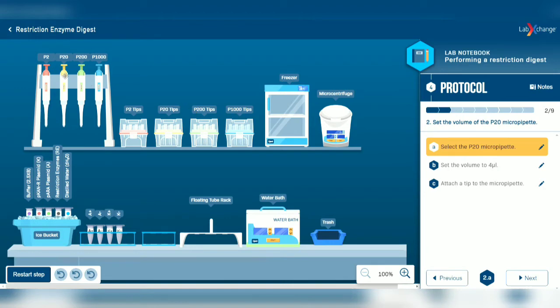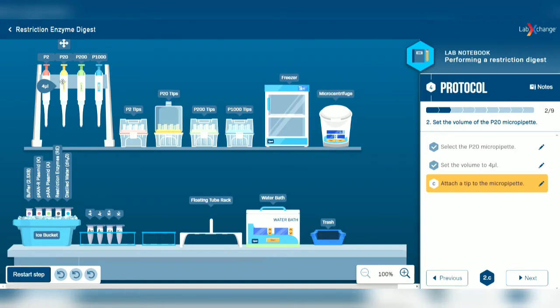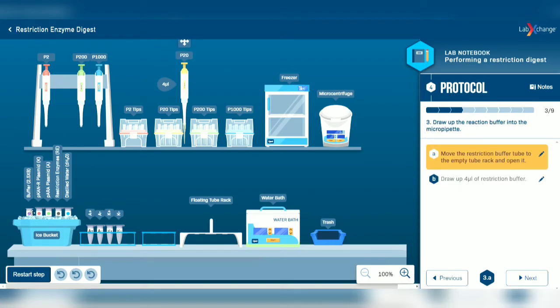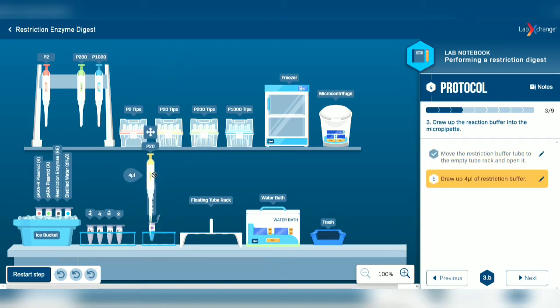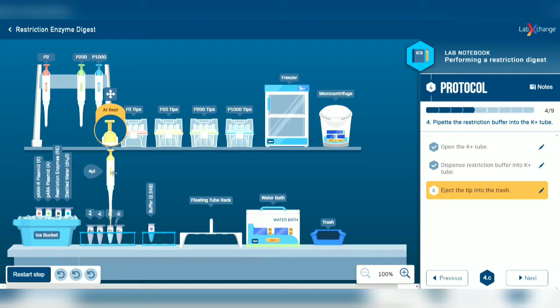Second, select P20 micropipette and set the volume to 4 microliters. Now move the restriction buffer to the empty tube rack and open it. Using the P20 micropipette, dispense 4 microliters of restriction buffer. Open the K-plus tube and transfer the restriction buffer into the K-plus tube. Close the K-plus tube and eject the tip to the trash container.